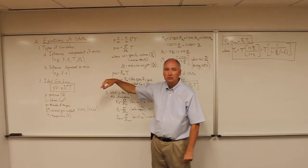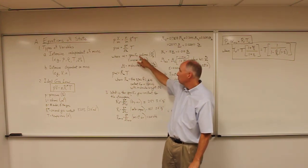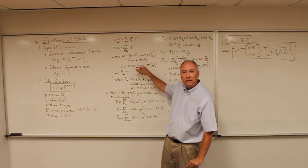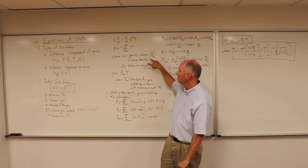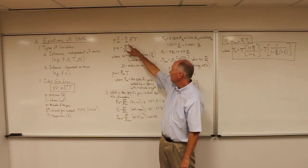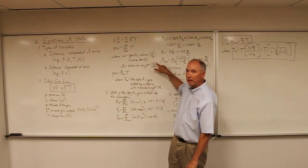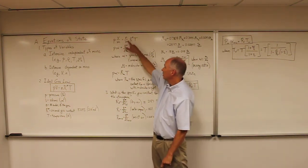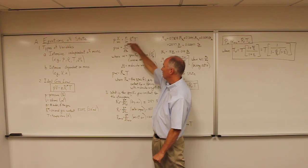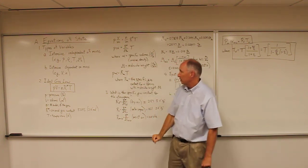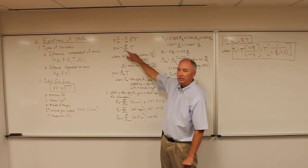Dividing volume by mass and the number of moles by mass, we arrive at a new equation: pressure times alpha, where alpha is the specific volume — essentially the inverse of density — with units of cubic meters per kilogram. We also have R* divided by the molecular weight, since molecular weight is in kilograms per mole, giving us moles per kilogram. The equation becomes P·α = (R*/M)·T.